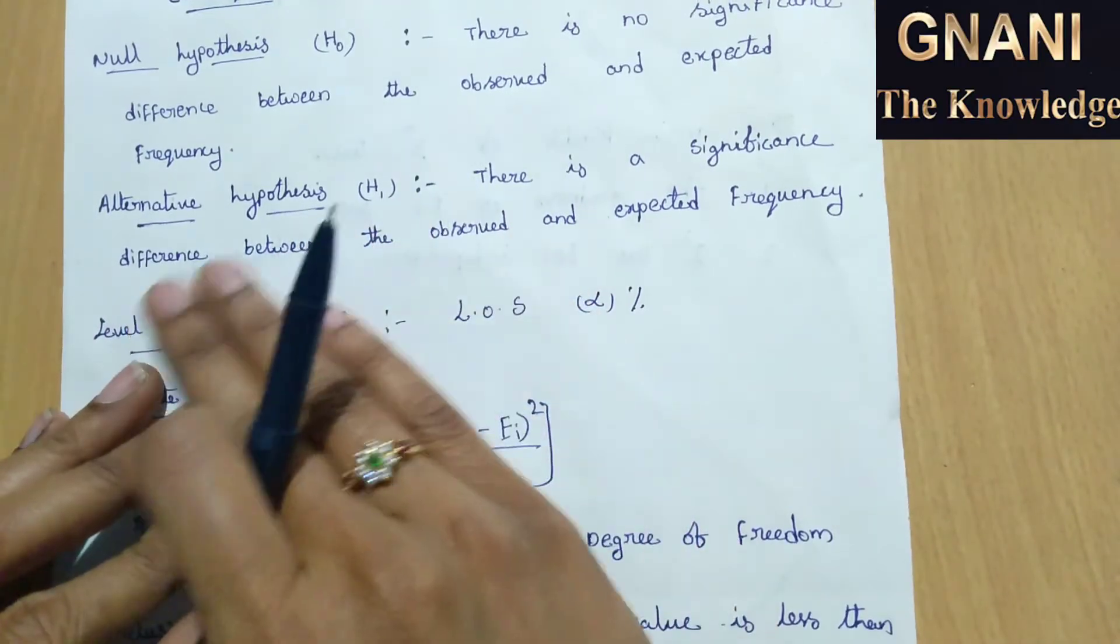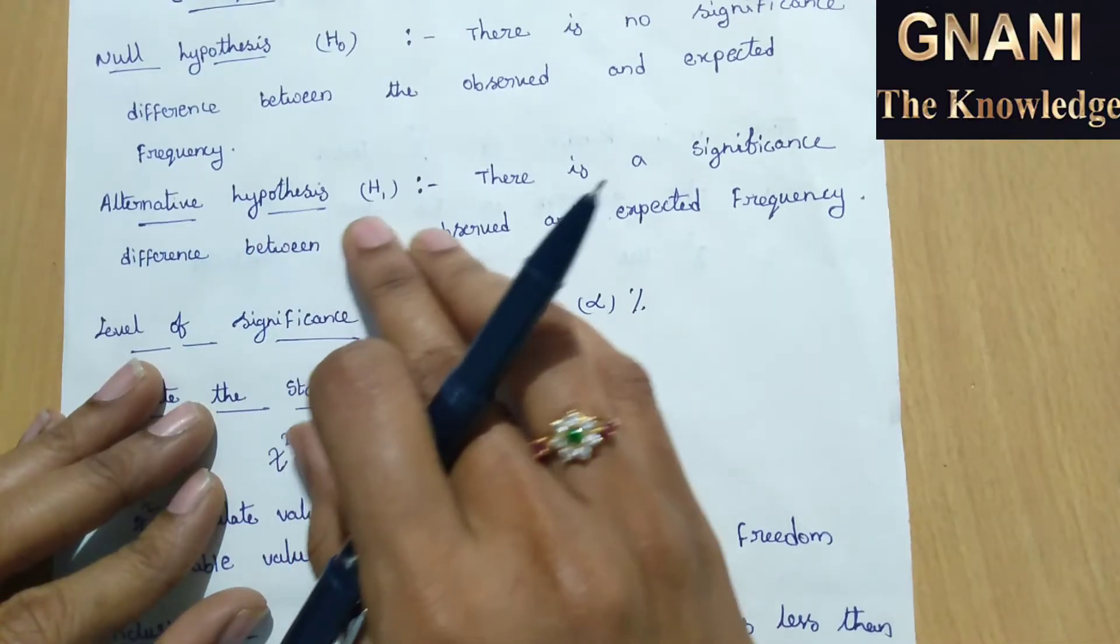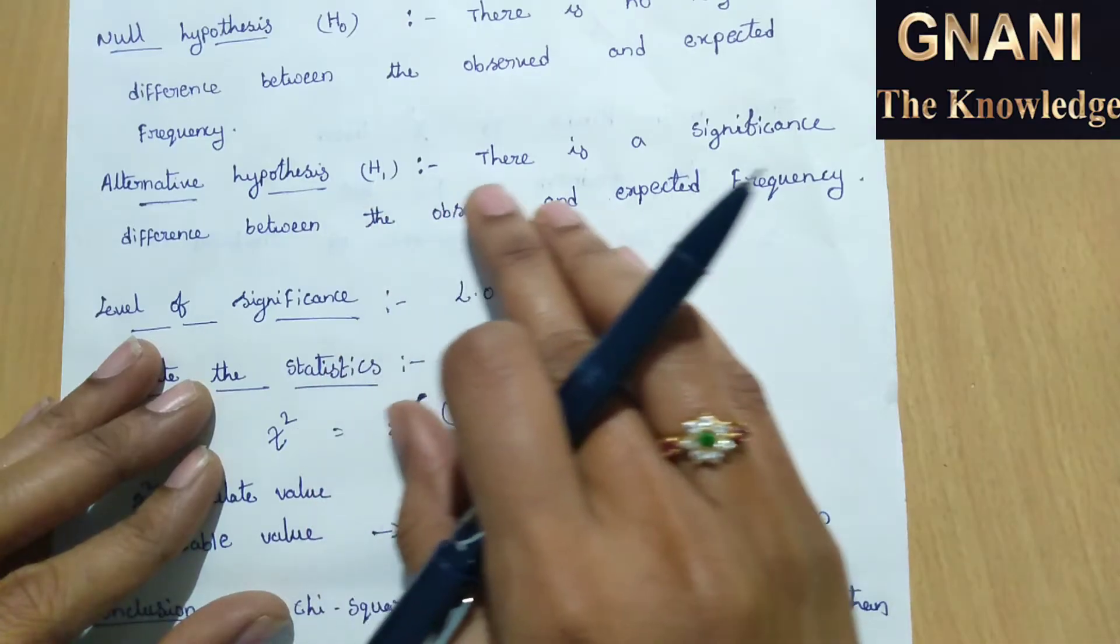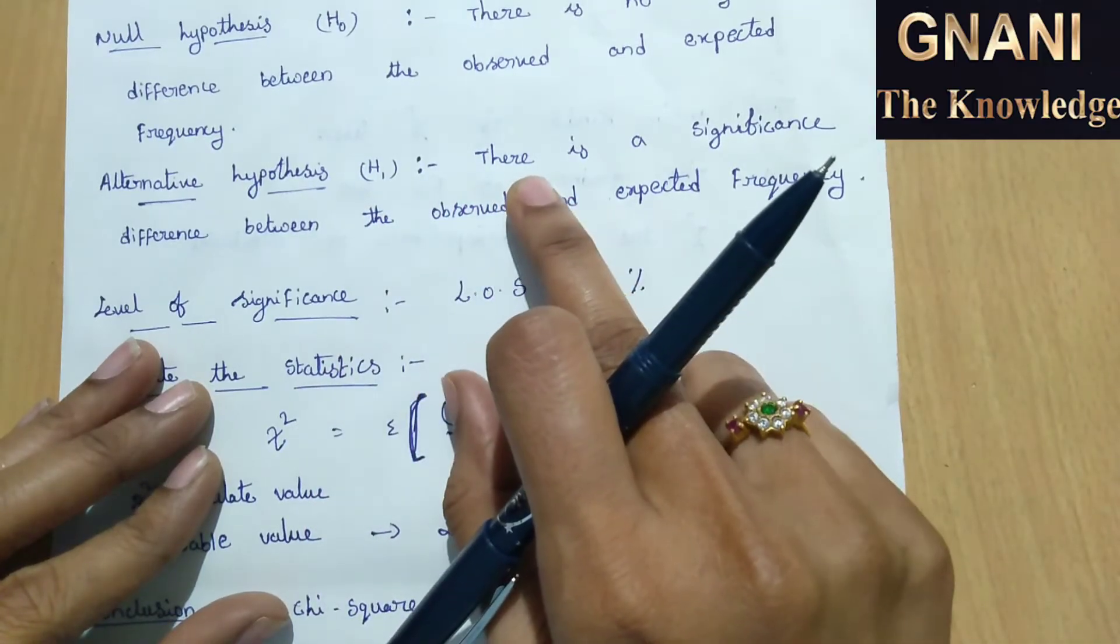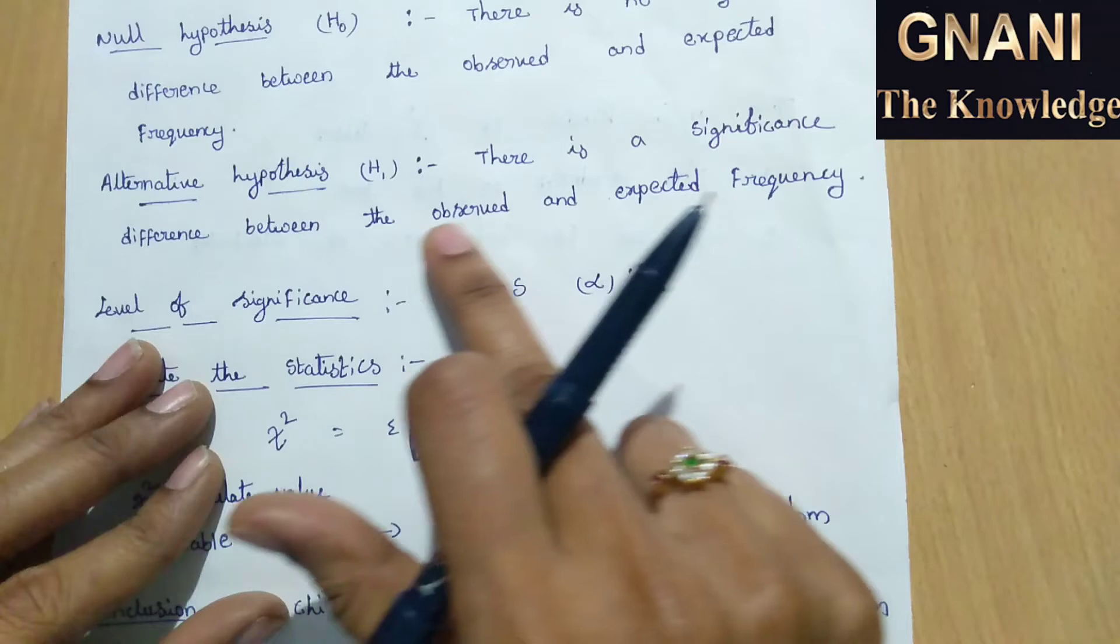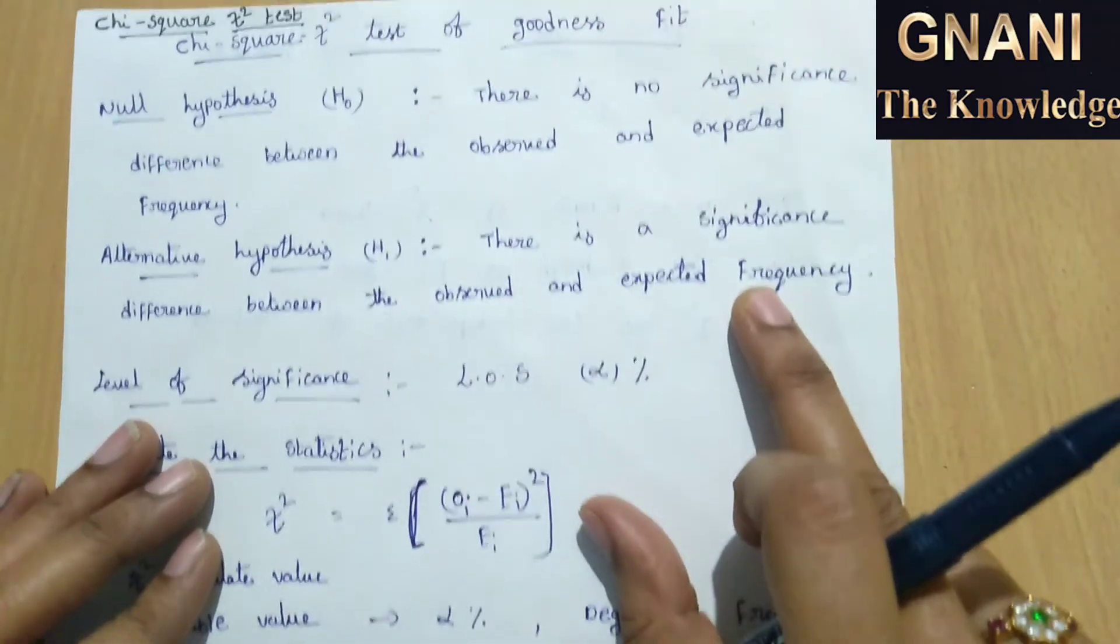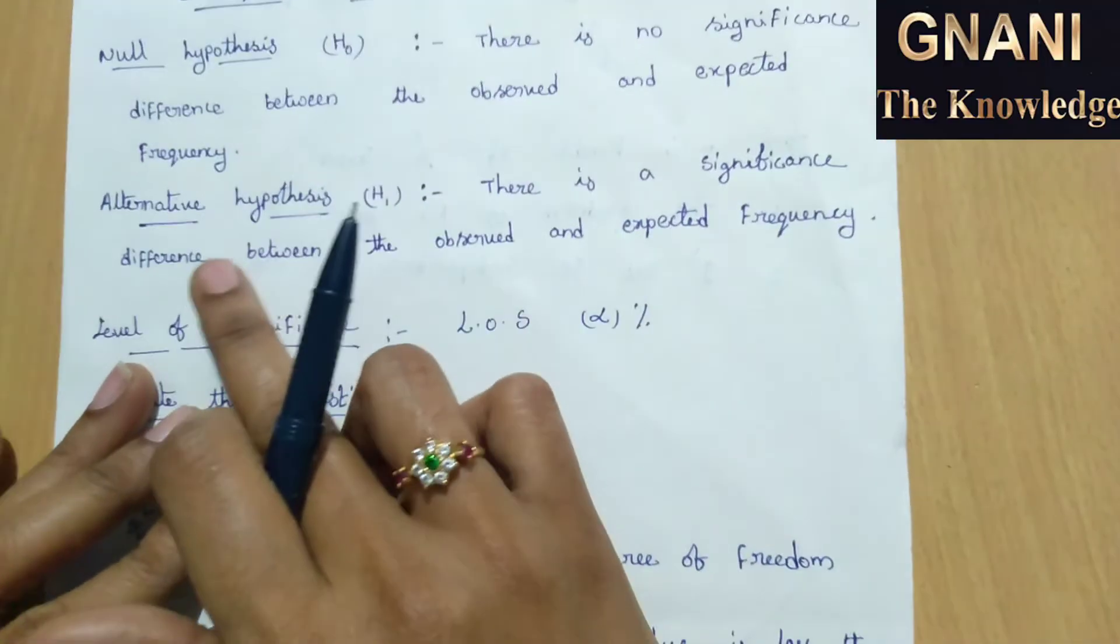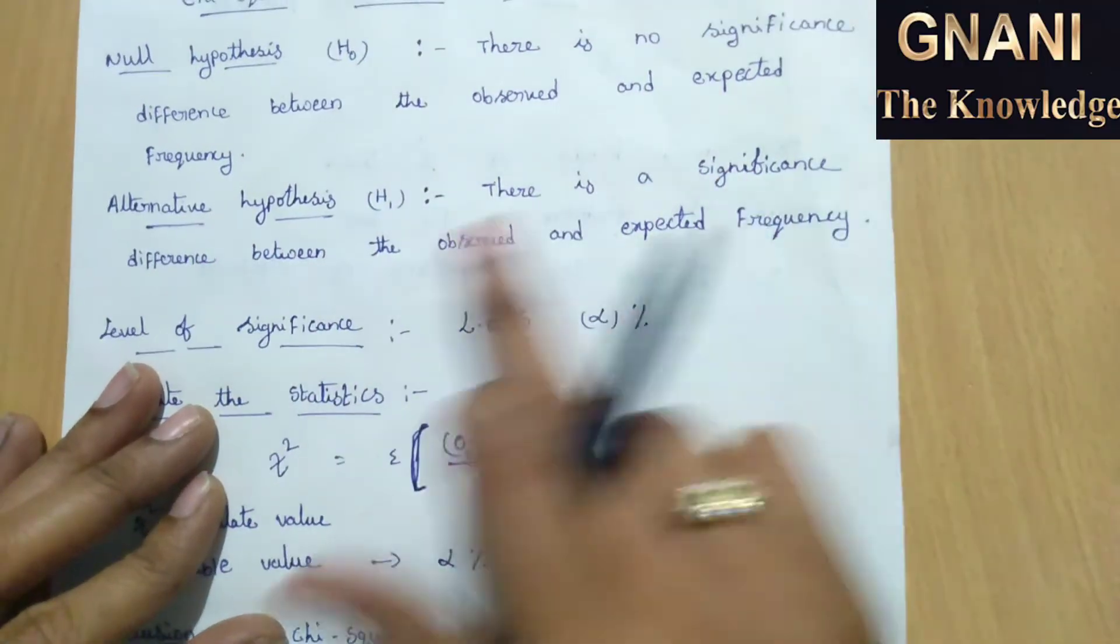And the second step is the alternative hypothesis. This is denoted by H1. And in this alternative hypothesis we can write like this. That means there is a significant difference between the observed and expected frequency. Here null hypothesis there is no significant difference. In this alternative hypothesis there is a significant difference.